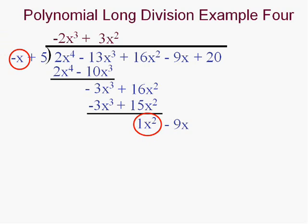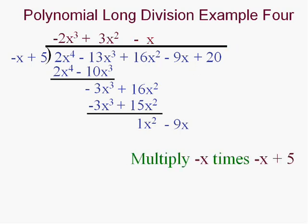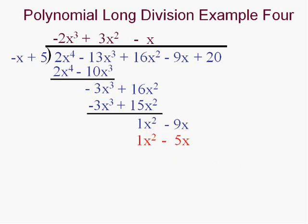Bring down the next term. Once again, look at the first two. Negative x goes into positive x squared negative x times. Write it neatly. And multiply. And I get positive x squared minus 5x. Now we're back to subtracting a negative, aren't we? And I get 9 minus negative 5. I get negative 4x. One last time.